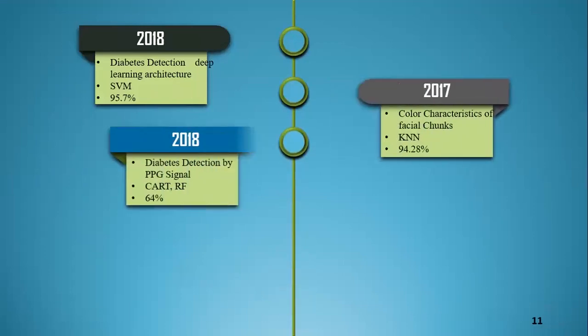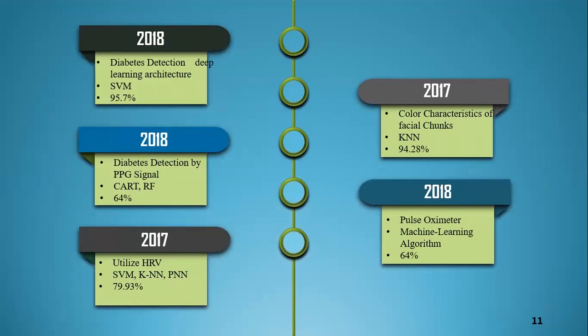Now moving to the literature review. There are many techniques for the diagnosis of diabetes. First, diabetes detection through a deep blending architecture uses an SVM classifier and achieved 95.7% accuracy. Second, diabetes detection by PPG (photoplethysmogram) signal — an optically obtained plethysmogram used to detect blood volume changes in the microvascular bed of tissues — uses CART and RF classifiers and achieved 64% accuracy. RF is random forest; CART is classification and regression tree.